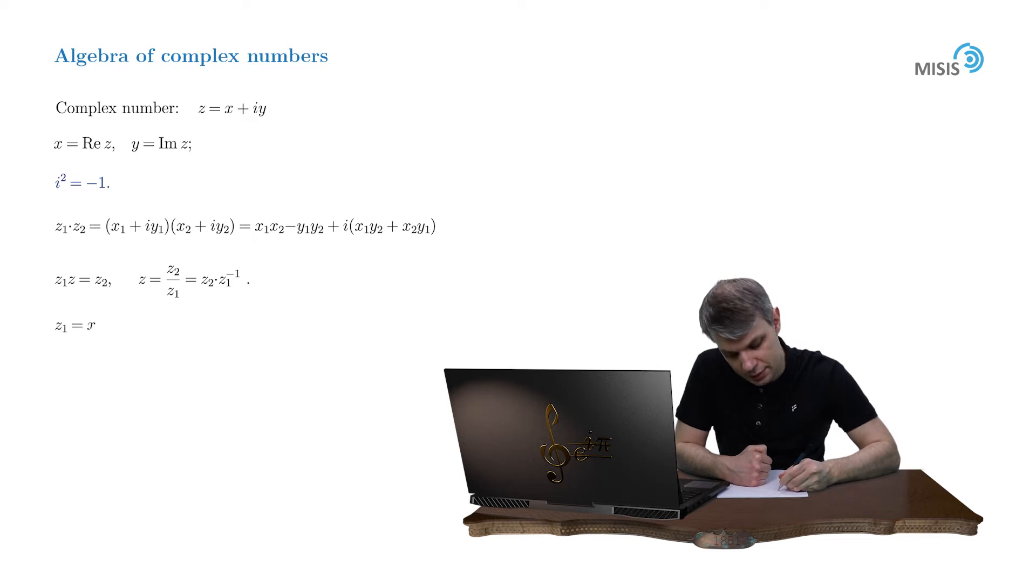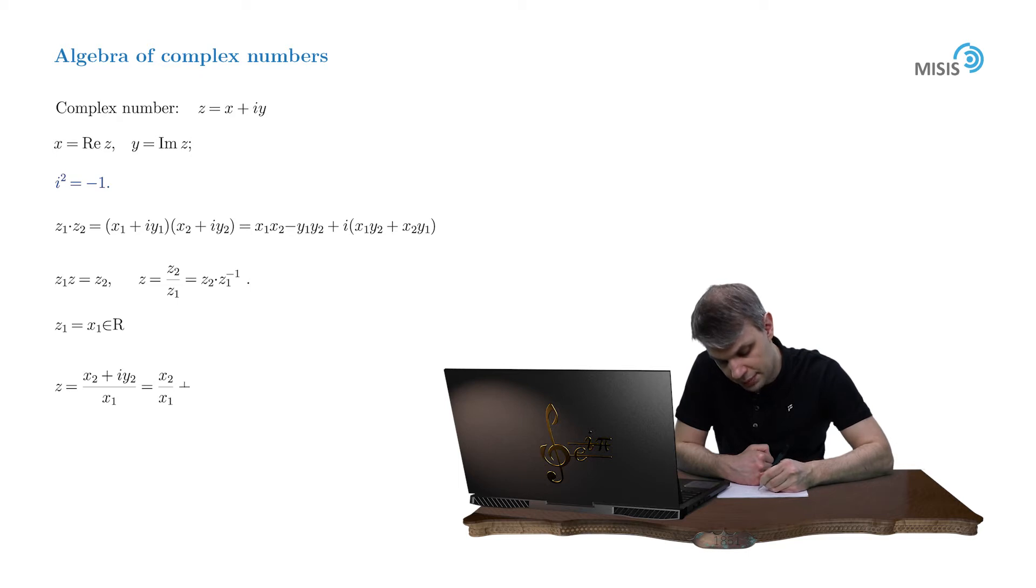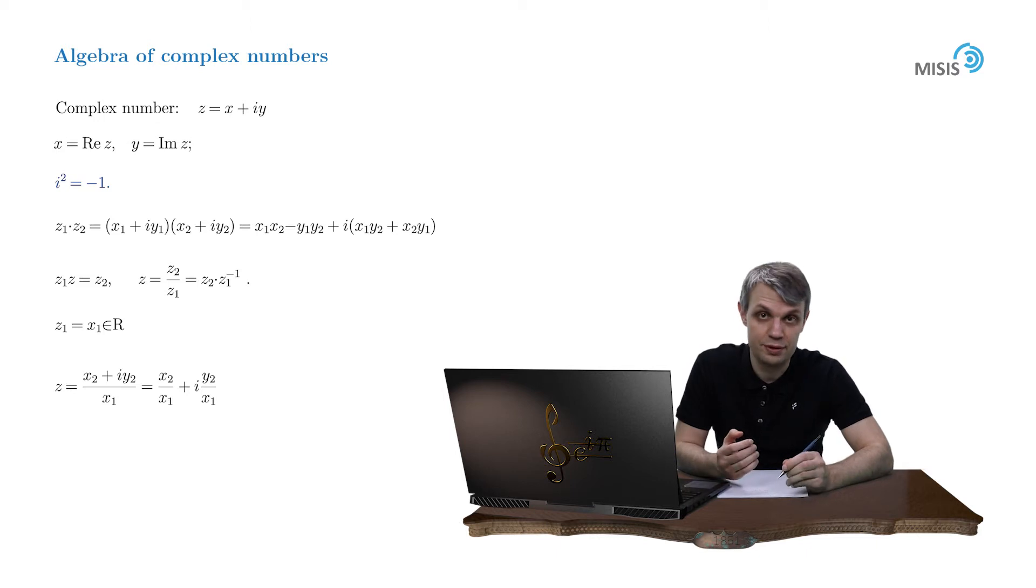Then z is simply equal to z2 which is x2 plus iy2 divided by the real number x1. And you divide separately the real part of this number and the imaginary part. And you obtain the complex number x2 divided by x1 plus iy2 divided by x1. Now let's suppose that z1 is complex. Then what to do?